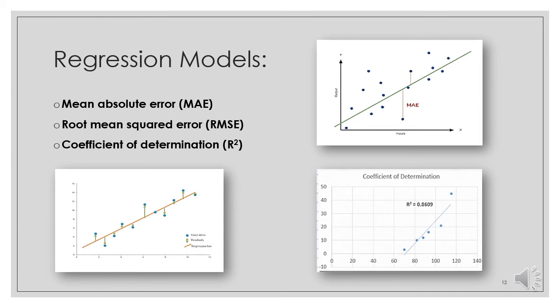Third, coefficient of determination, it is the amount of variation in the output-dependent attribute which is predictable from the input-independent variable. It is used to check how well observed results are reproduced by the model, depending on the ratio of total deviation of results described by the model.